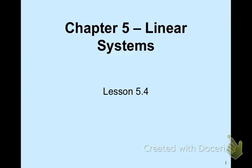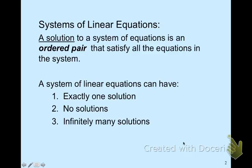In this lesson, lesson 5.4, we're going to be looking at all the things we've learned about systems of equations, and we're going to determine if we need to solve using graphing, elimination, or substitution based on the slope-intercept form. With a system, the solution is the ordered pair that satisfies all equations. Systems can have exactly one solution — as in lessons 5.1, 5.2, and 5.3 — but today we'll examine situations with no solution or infinitely many solutions.